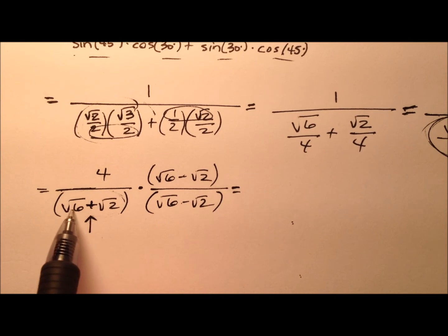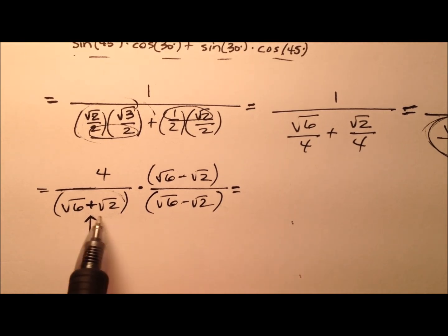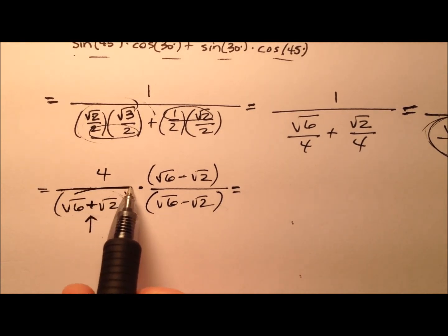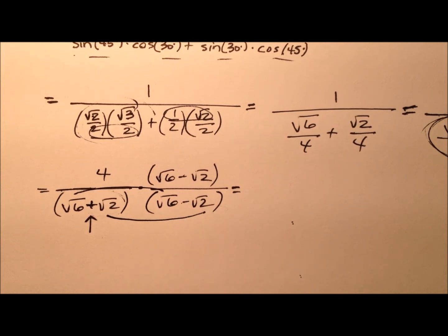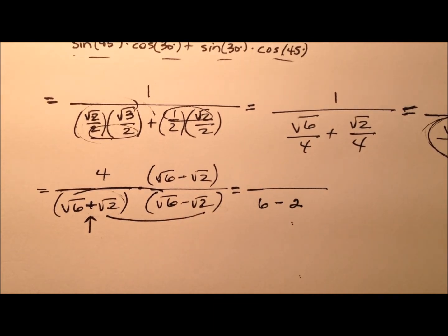Let's focus on the denominator first. It's the difference of squares, meaning we only need to multiply the firsts and the lasts because the middles will cancel each other out, and that's by design. We're going to have the square root of 6 times the square root of 6, which is 6, and the square root of 2 times the square root of 2, which is 2, and we're going to be subtracting those.